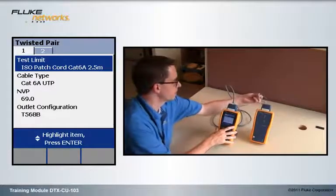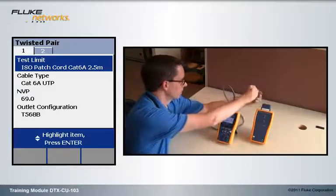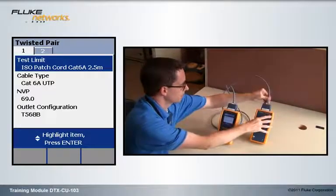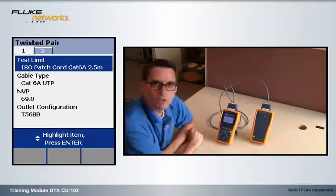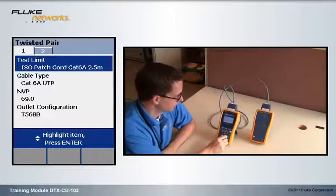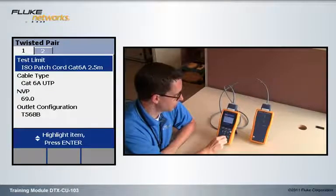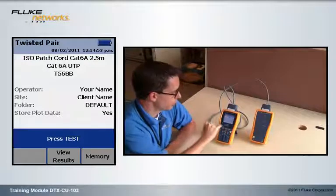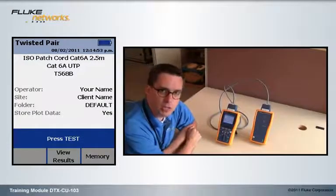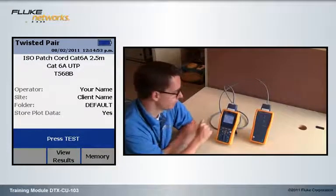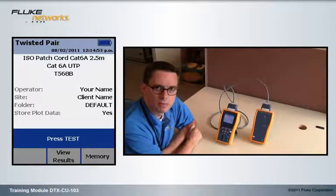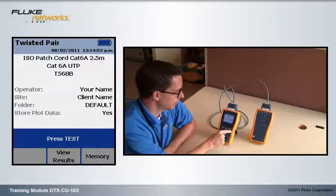Plug in my patch cord. They chirp to tell me they've been connected. Rotate the dial to auto test. Quick check, I've got CAT6A UTP set up, which is good. My T568B, correct. Let's hit the test key.